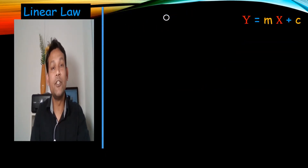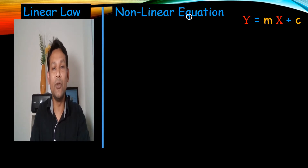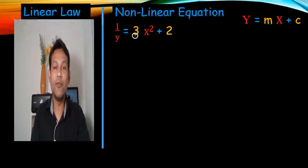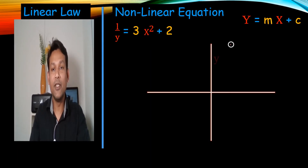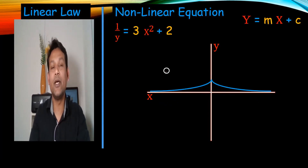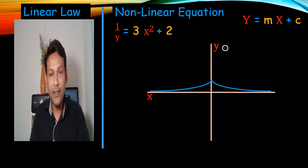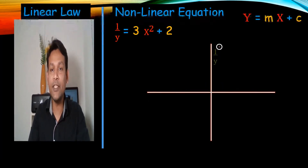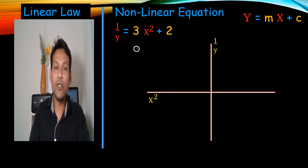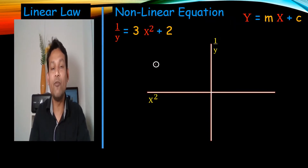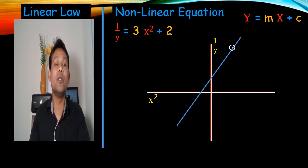But what about a non-linear equation? This non-linear equation I'm using is 1/y equals 3x squared plus 2. When I draw the graph with y on one axis and x on the other, it gives a curved shape — not a straight line. But according to linear law, we can convert this non-linear equation into linear form. On the y-axis I write 1/y and on the x-axis I write x squared. When we draw the graph using x squared and 1/y, we will always get a straight line. This is called the linear law.